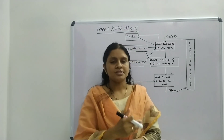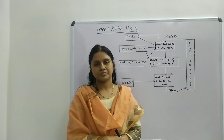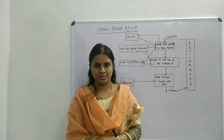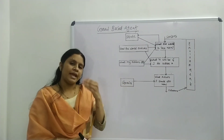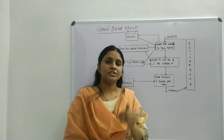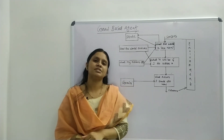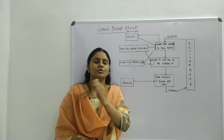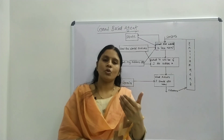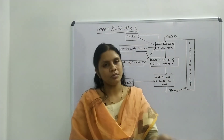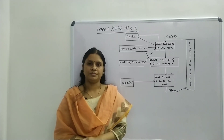Likewise, an intelligent agent will be having a set of goals with desirable situations. The agent can use these goals with a set of actions and their predicted outcomes in order to achieve the goal. Achieving the goal may take one action or more than one action may be required.